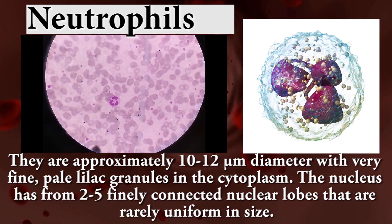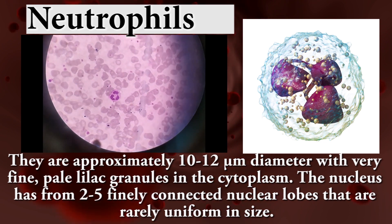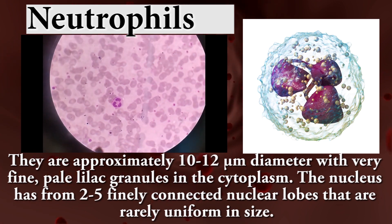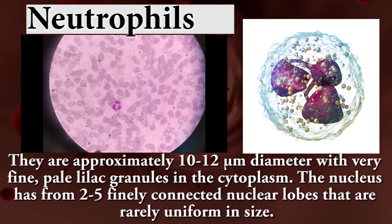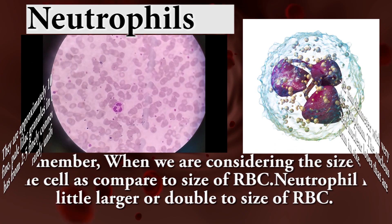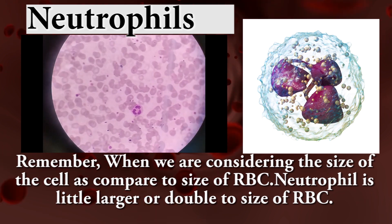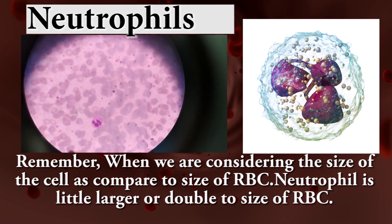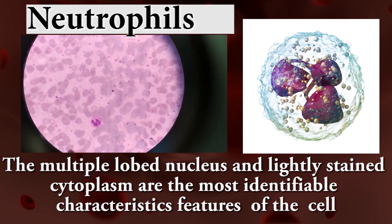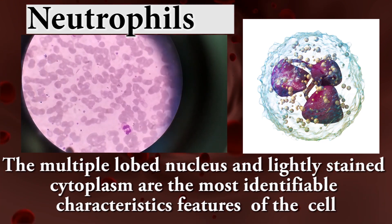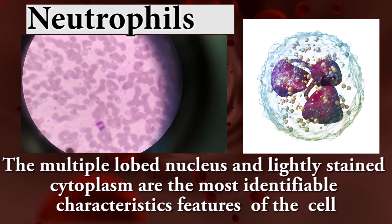Neutrophils are approximately 10 to 12 micrometers in diameter with very fine pale lilac granules in the cytoplasm. The nucleus has 2 to 5 finely connected nuclear lobes that are uniform in size. Neutrophils are little larger or double the size of RBCs. The multiple lobe nucleus and lightly stained cytoplasm are the most identifiable characteristic features.